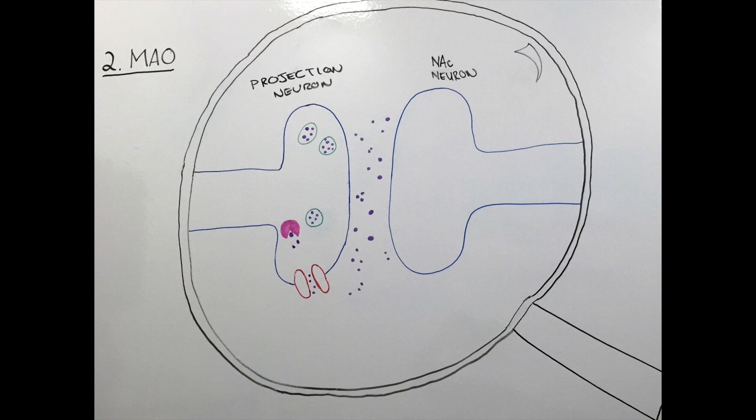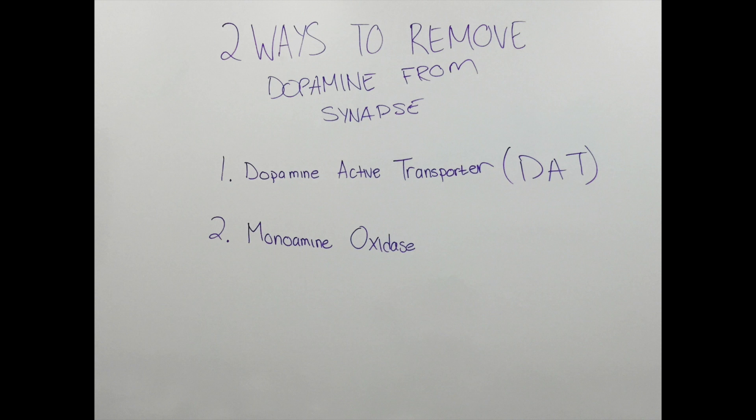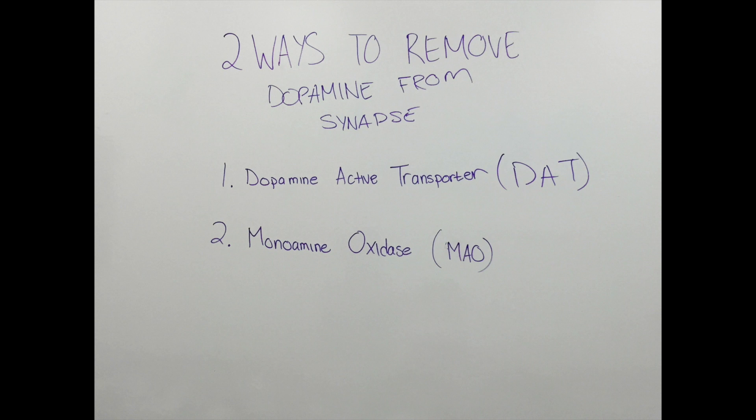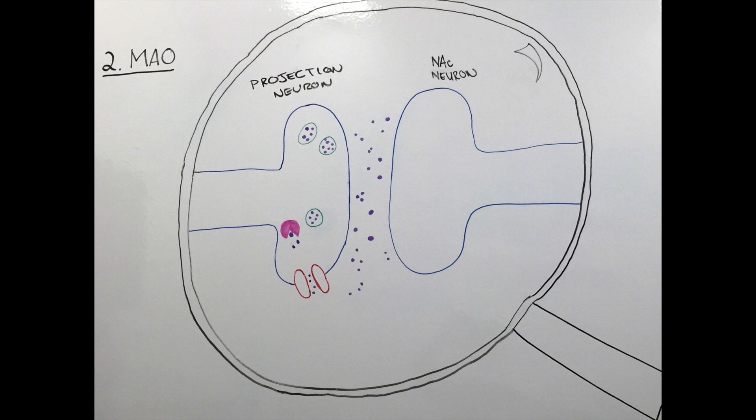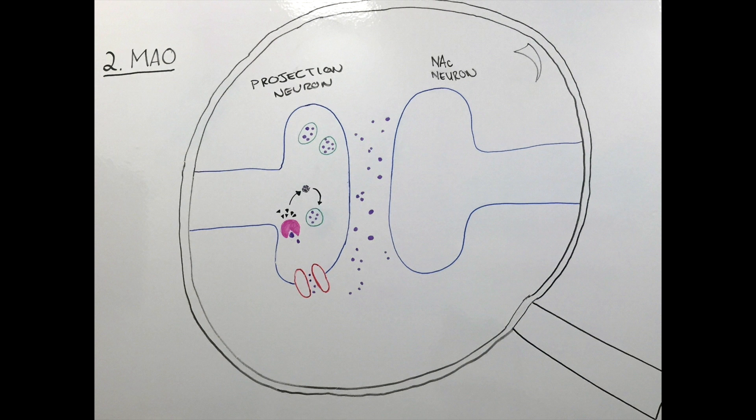The second way dopamine is removed is by breaking it down into parts that no longer act as neurotransmitters. This is done by monoamine oxidase, or MAO. After the neurotransmitters are broken down, they can be combined back together in the neuron to form usable neurotransmitters.